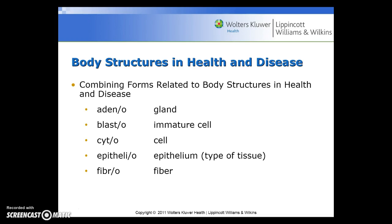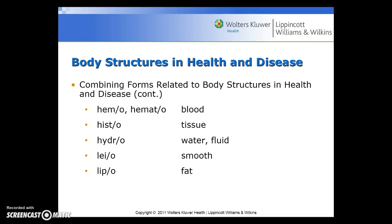The chapter begins with combining forms related to body structures in health and disease. These terms include: aden/adeno for gland, blast/blasto for immature cell, cyto for cell, epithelio for epithelium (a type of tissue), fibro for fiber, hemo/hemato for blood, histo for tissue, hydro for water or fluid, and leo for smooth, lipo for fat.